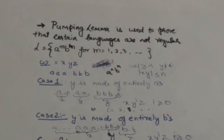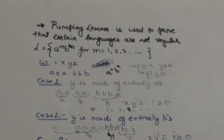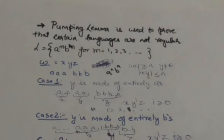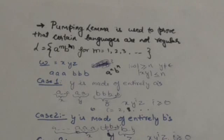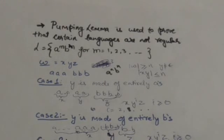Pumping Lemma is used to prove that certain languages are not regular. It is used to prove that a particular language is not a regular language. It is never used to prove that a particular language is a regular language. Now how can we prove that a particular language L is not a regular language using the Pumping Lemma? First of all, take any constant n which depends on the language L that we are going to prove non-regular. Then take any string which belongs to language L whose length is greater than or equal to n.